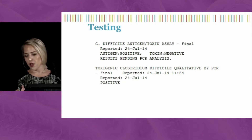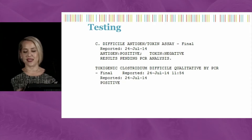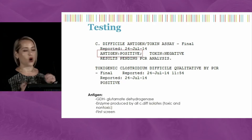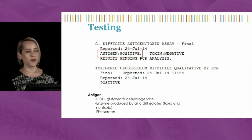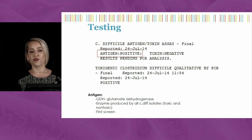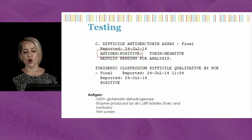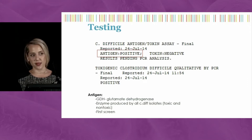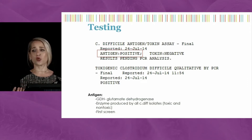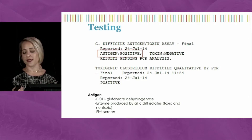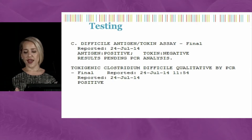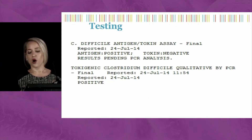This is a triple test panel from my hospital. The first test is the antigen test, also called GDH. This is the glutamate dehydrogenase test—an ELISA-based test specifically looking for the enzyme glutamate dehydrogenase, which is produced by all C. diff isolates, both toxigenic and non-toxigenic strains. It's essentially a first-pass screen telling you about the presence of bacteria to warrant further testing.